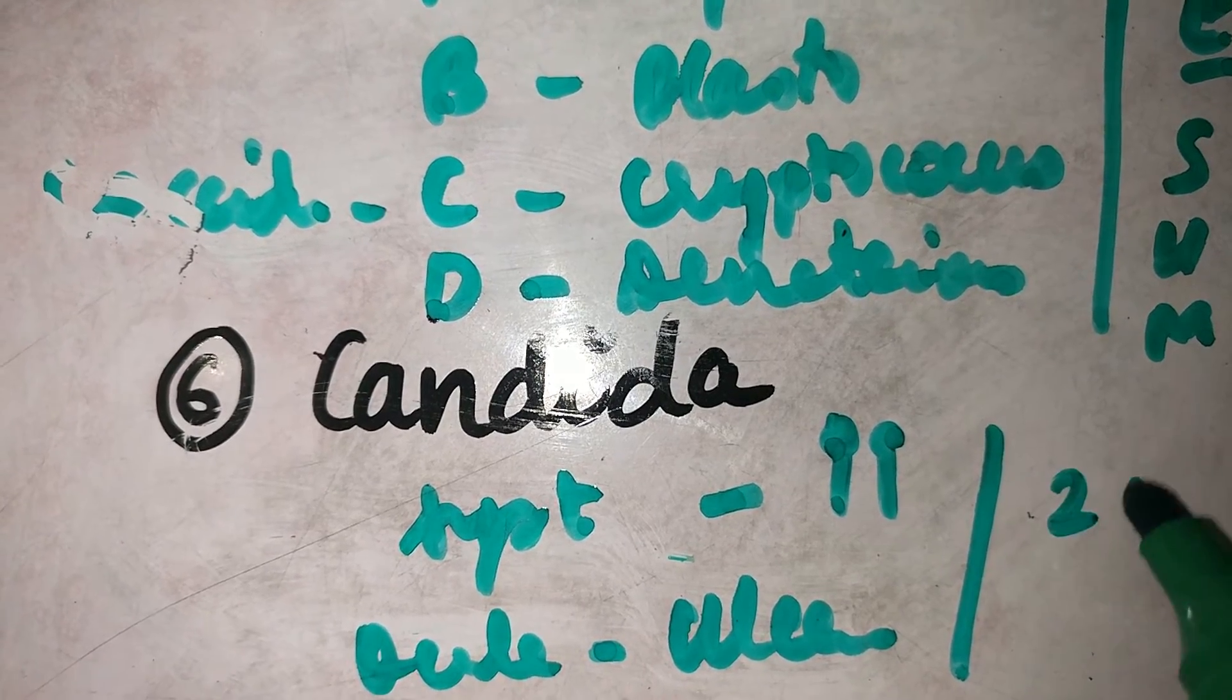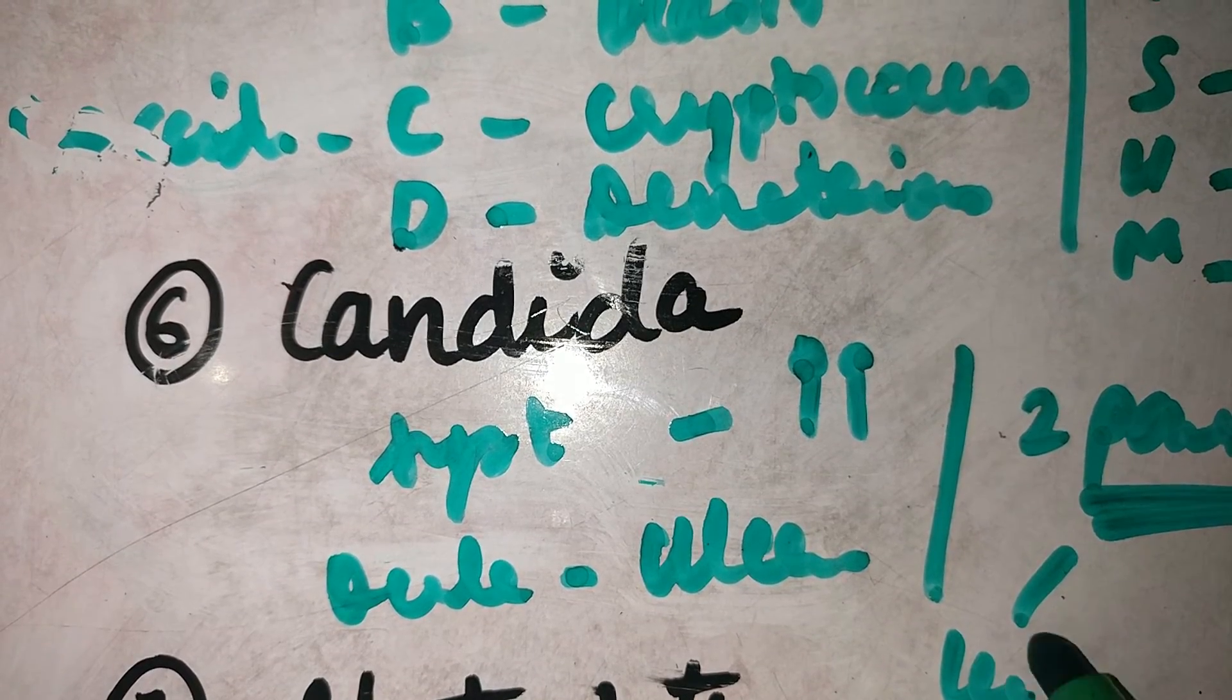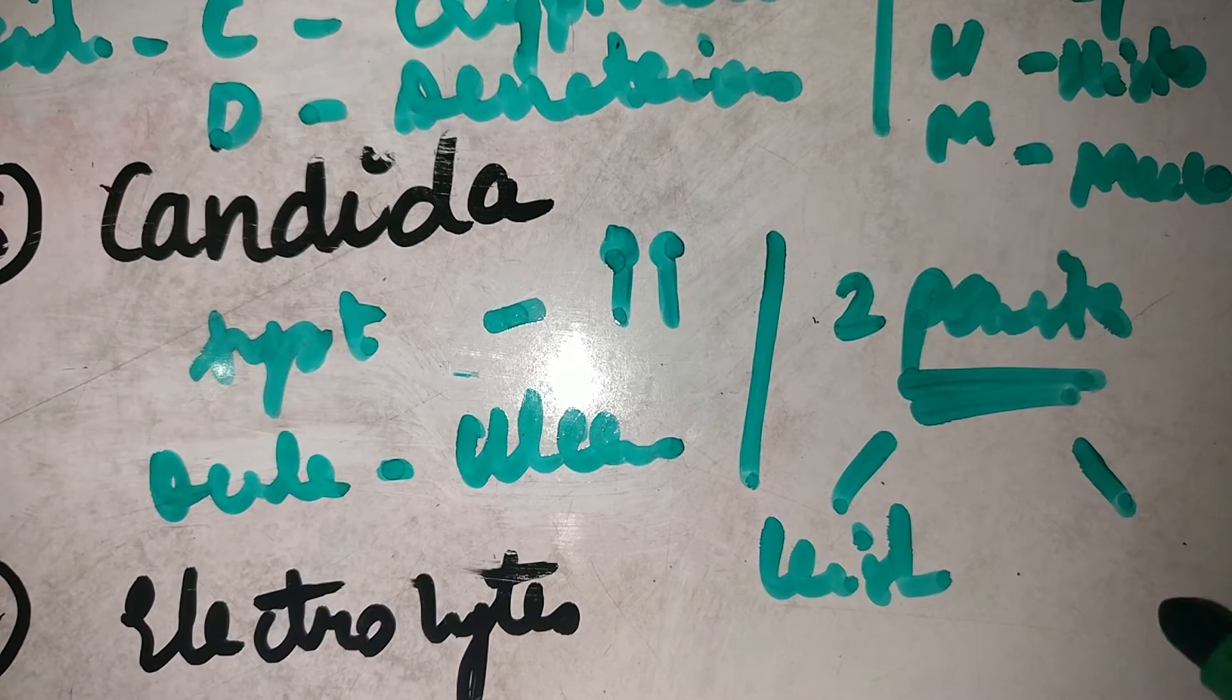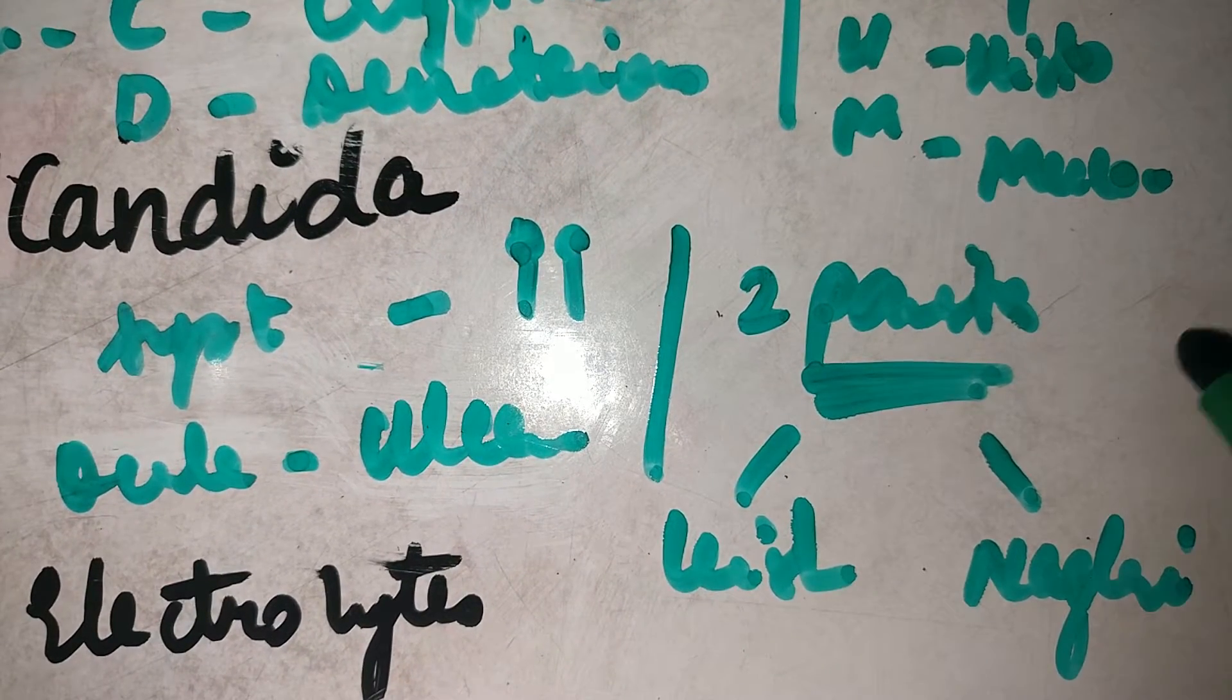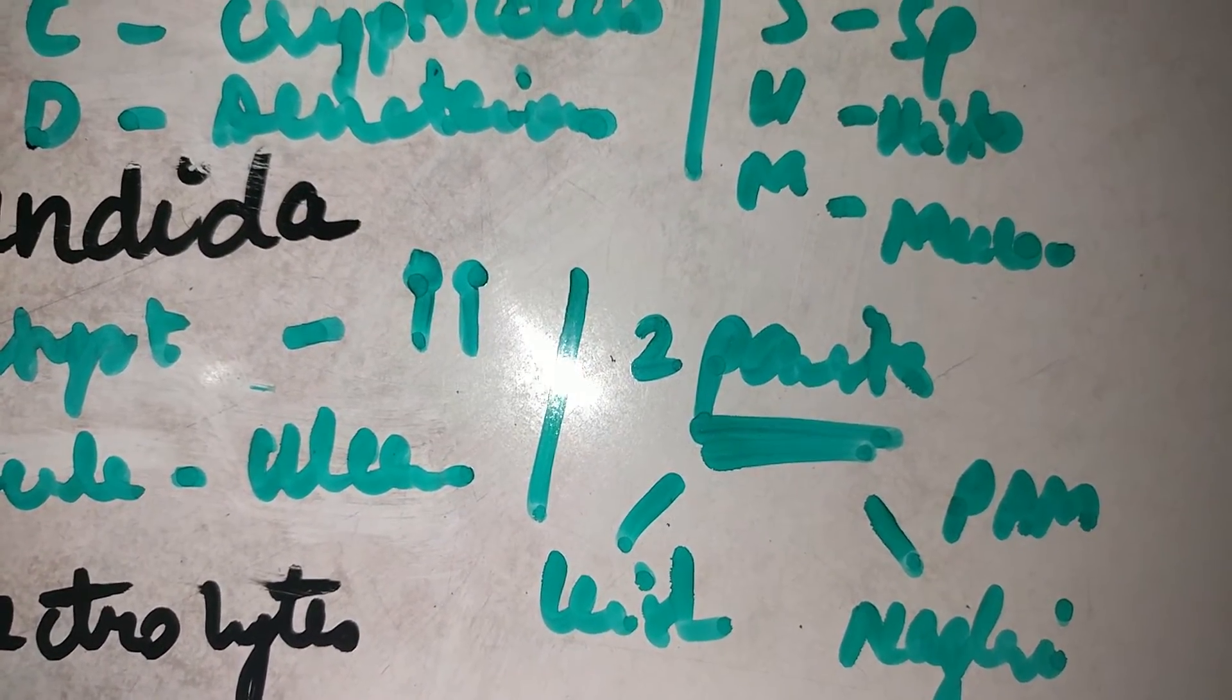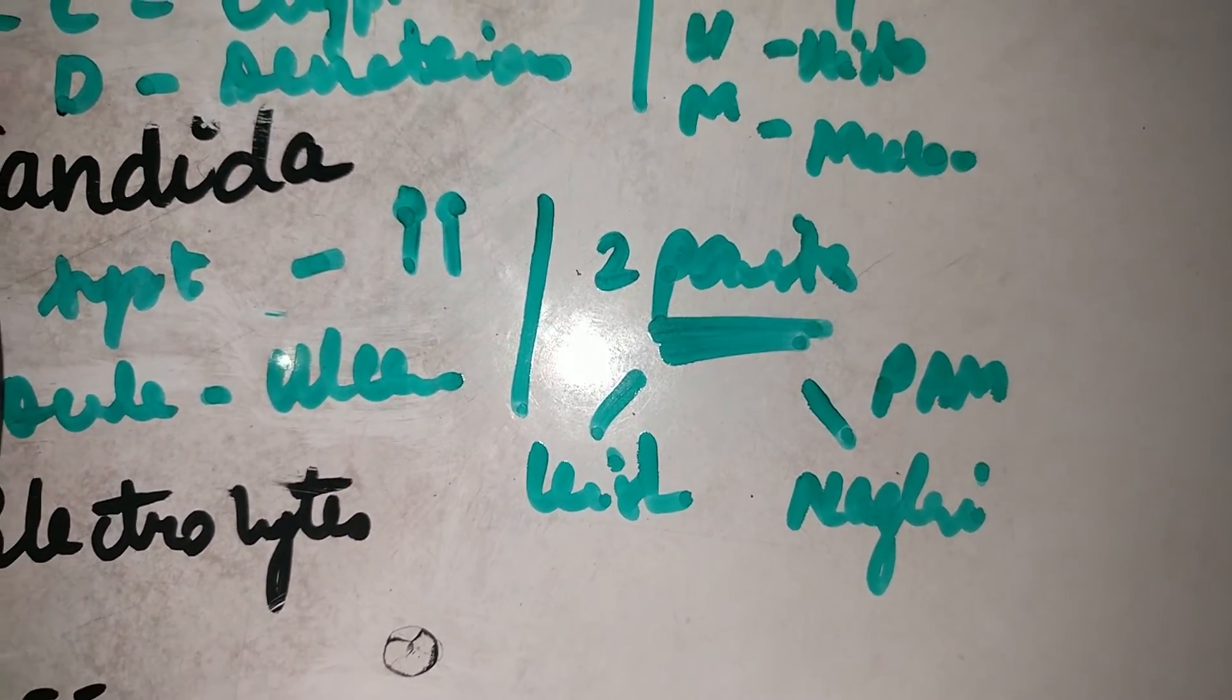Other than this, it's used for two parasites which is a rather special point. One is Leishmaniasis that is Kala Azar and the other one is Naegleria Fowleri causing primary amoebic meningoencephalitis or PAM. So it's used for these two also. The two parasites are Leishmania and Naegleria.